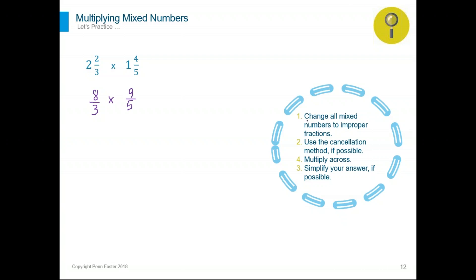That's it — done with the first step. Those rules you can write down in your notes. The next step is not to multiply across yet. We need to check if any numerators and denominators have anything in common so we can eliminate it, so that when we multiply we don't have to simplify the final answer. I see a nine and a three. Divide three over three and nine over three: the problem becomes eight over one times three over five.